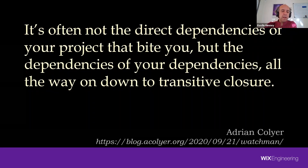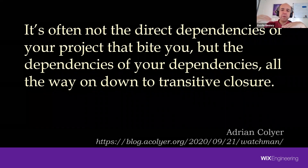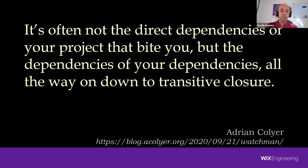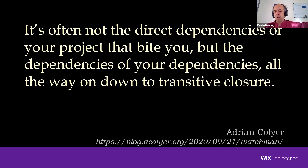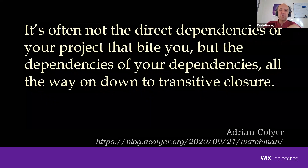Adrian Collier does a nice summary of computer science papers and had this quote: 'It's often not direct dependencies of your project that bite you, but the dependencies of your dependencies, all the way down to transitive closure.' So instead of regarding architecture as something big and fixed, we need to think of it as a collection of ideas we need to prove.